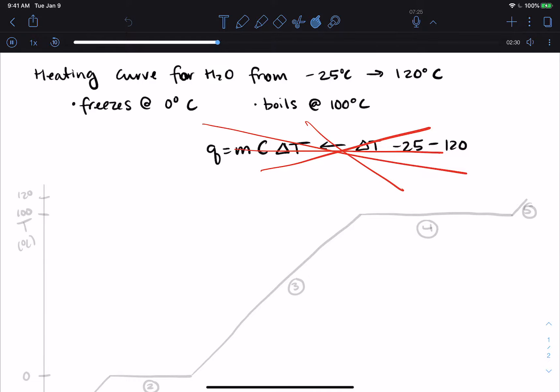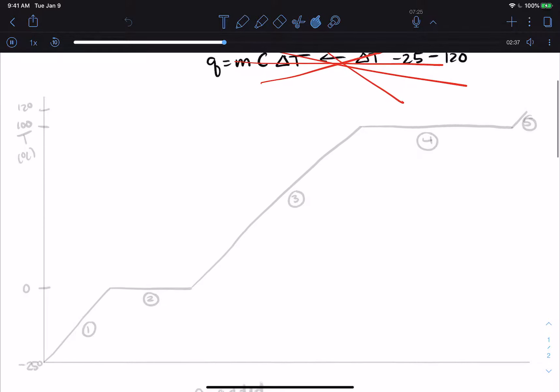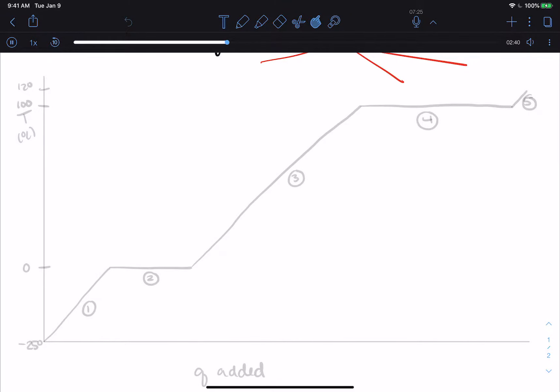So let's draw a picture though, and look at the different components and where those components show up. So I'm going to track temperature on one scale and heat added on the other. So this is going to be my temperature and heat added. So if I'm at minus 25 degrees, I have solid water, right? I have ice until I get to zero degrees.